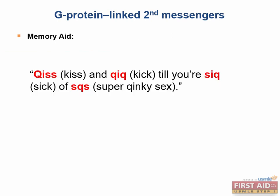To remember all of these receptor G protein relationships, you can use the following mnemonic: 'Kiss and kick till you're sick of super kinky sex.' Note the spelling isn't proper English, but the only letters used are S, I, and Q, which represent the three main subcategories for G protein-linked second messengers.